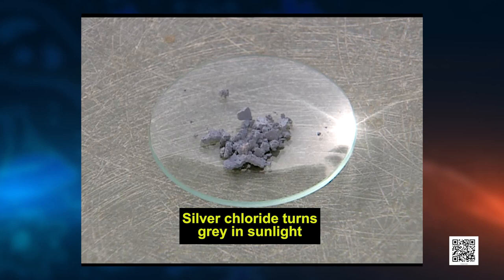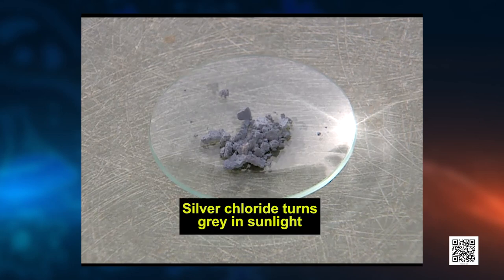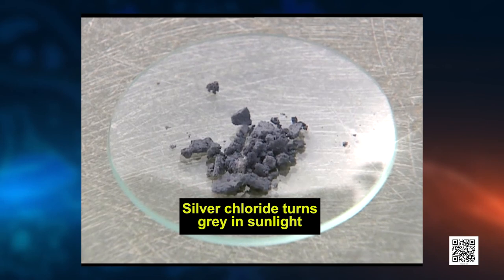This is what happens in photochromatic glasses. In glass, silver chloride and silver bromide are present. When light falls on the colourless glass, AgCl and AgBr break into ions — chloride ions and bromide ions — showing gray and brown colour.